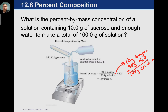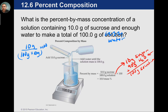Some questions may say 'water' instead of 'solution.' If that's the case, you have to add both together. For example, if the problem says 100 grams of water, you'd take 10 divided by (100 grams of water plus 10 grams of sugar), then times by 100. If it says 'solution,' just take little divided by big times 100.